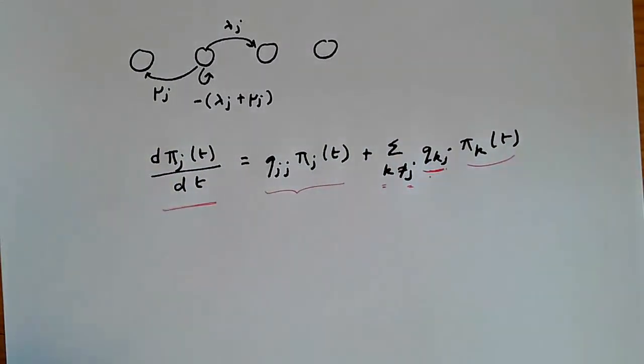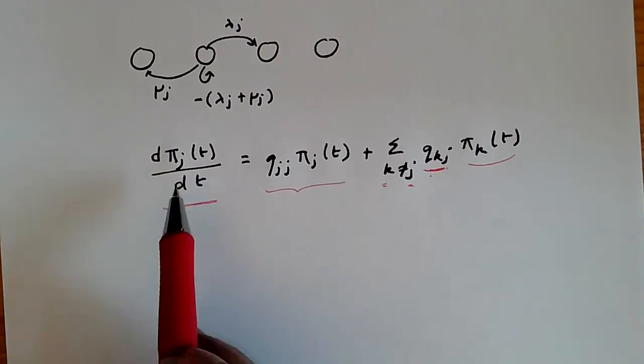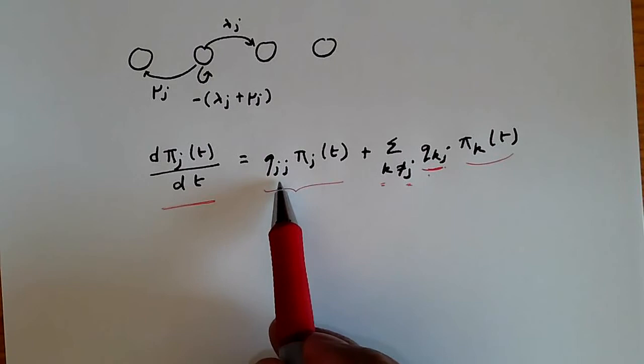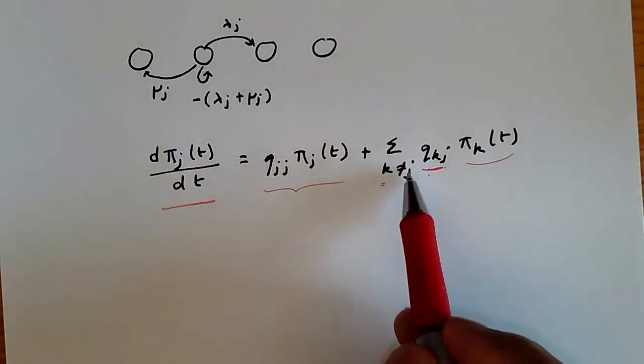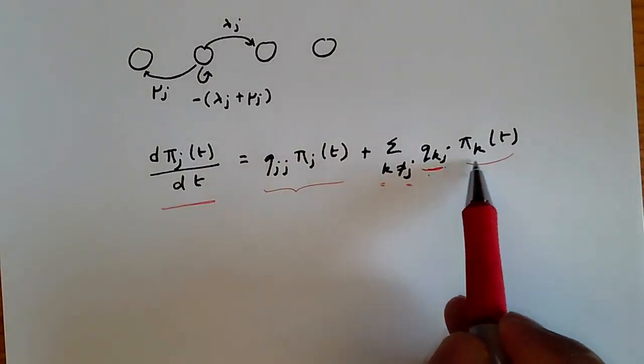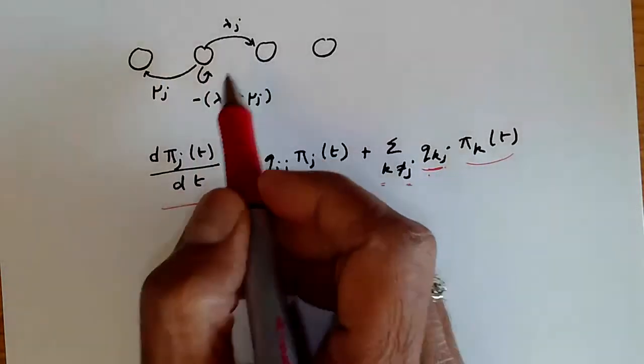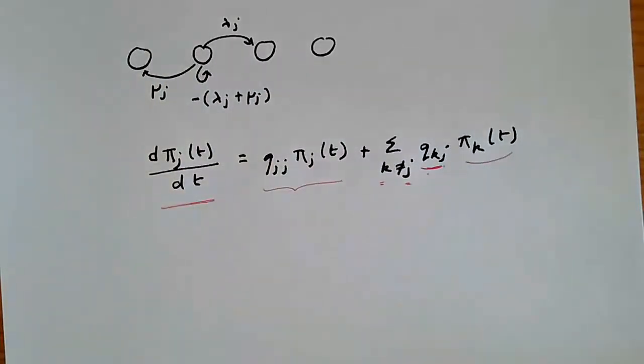So here we can think of probability as being something like a fluid, and the rate at which the amount of fluid in state j changes corresponds to the amount of fluid that stays in the same state, which is this q j j rate, and add to it the flows from upper and lower states, the states above and below, which are given by here.